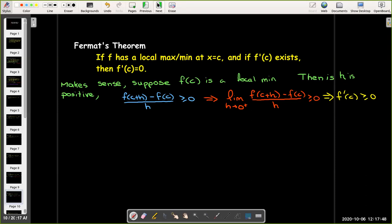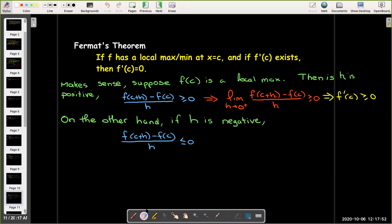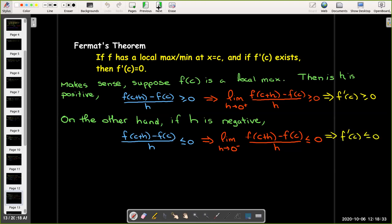The next thing to think about would be okay, well if h is negative, then our inequality is reversed. And so the limit as h approaches 0 from the left of that difference quotient is also going to be less than or equal to 0, which will tell me that f'(c) is going to have to be less than or equal to 0.